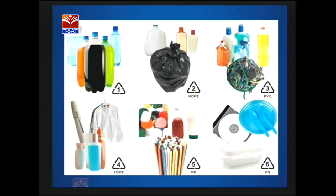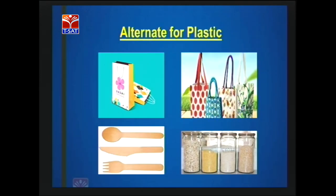Plastic is a problem affecting our environment, human health, and animals. Although plastic was introduced less than 100 years ago, it has become a staple in our day-to-day life. To save our earth from plastic, the best way is to replace plastic materials with more eco-friendly materials like jute, paper, wood, glass, and metal. These save our environment.